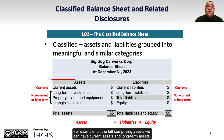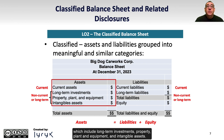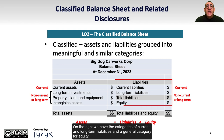For example, on the left, comprising assets, we can have current assets and long-term assets, which include long-term investments, property, plant, and equipment, and intangible assets. On the right, we have the categories of current and long-term liabilities, and a general category for equity.